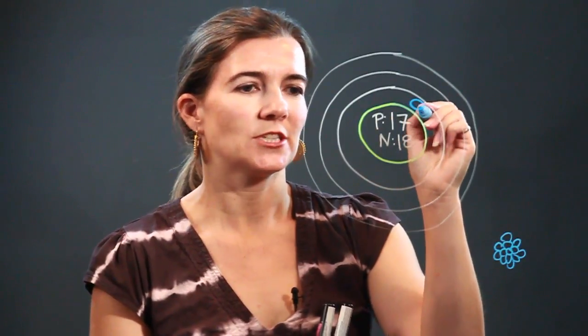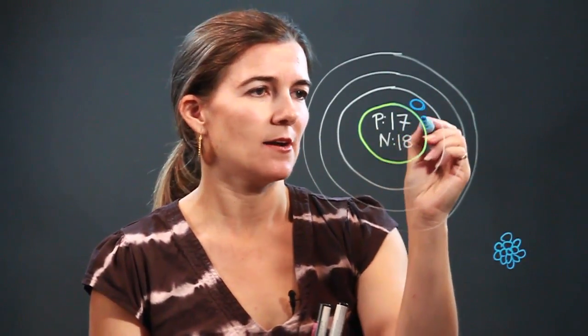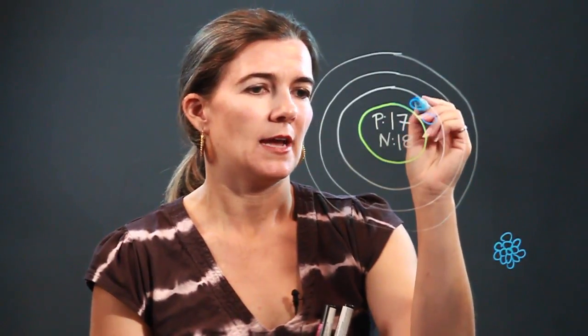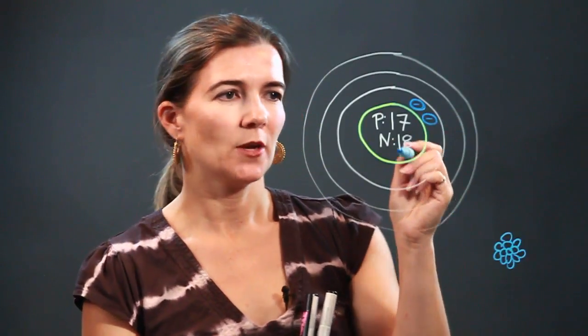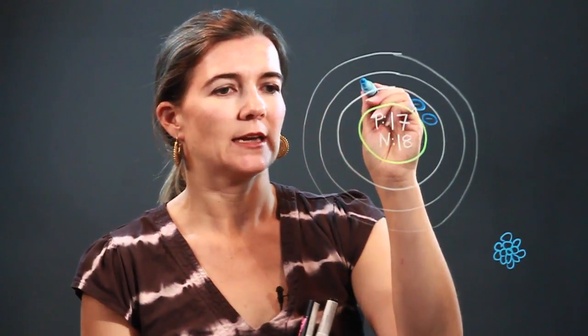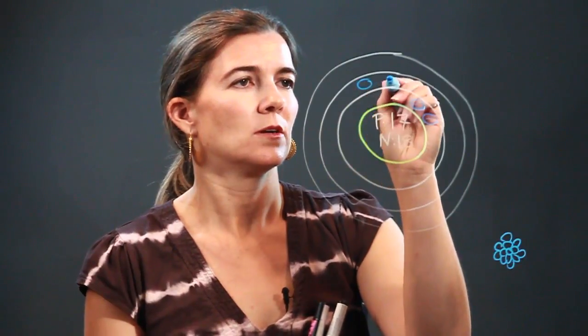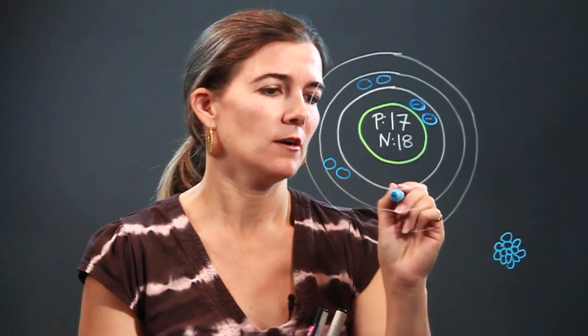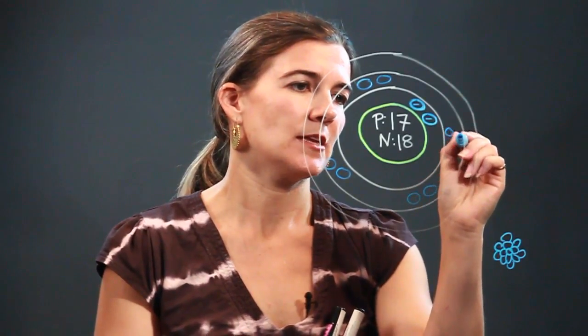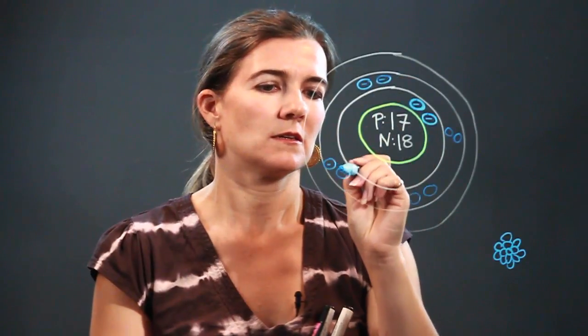In the first energy level we have two and so we're going to draw two circles. And then in the next energy level we have eight, so in groupings of two, I'm going to do one, two, three, four, five, six, seven, eight, my little negative signs.